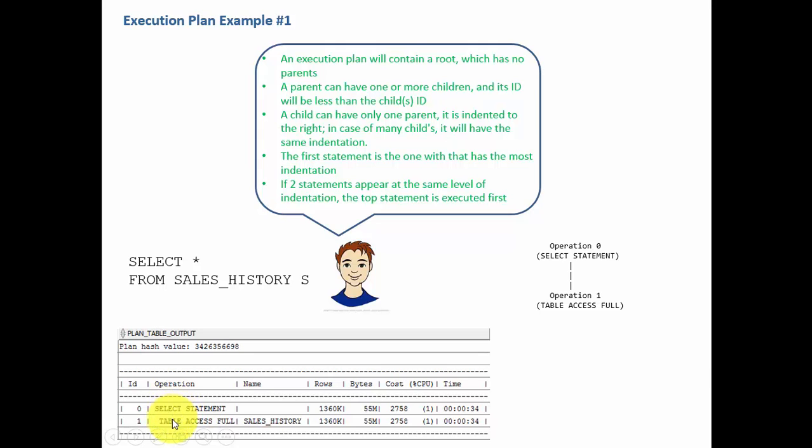And it has only one child, table access full. I have written the table access full. That means first, the operation 1 is performed, which reads the sales history table and gives the values to operation 0, which displays the rows.